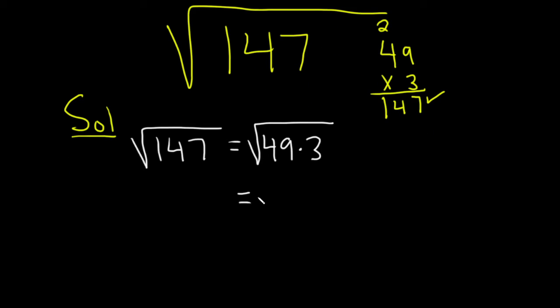So you can write this as the square root of 49 times the square root of 3.